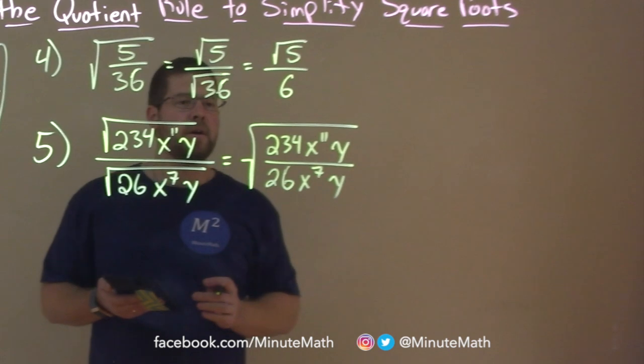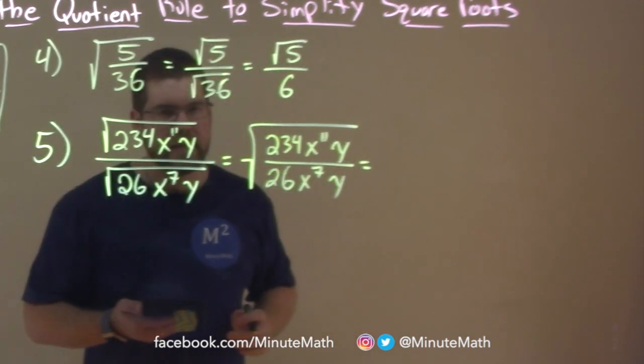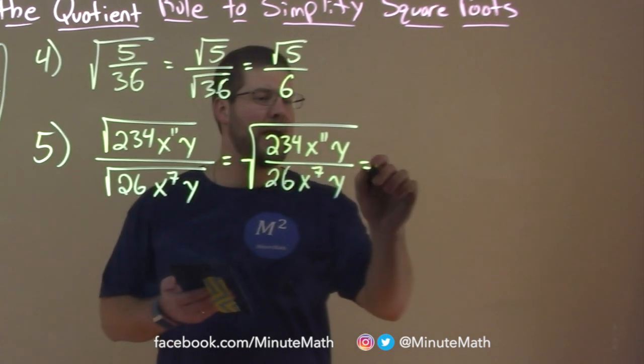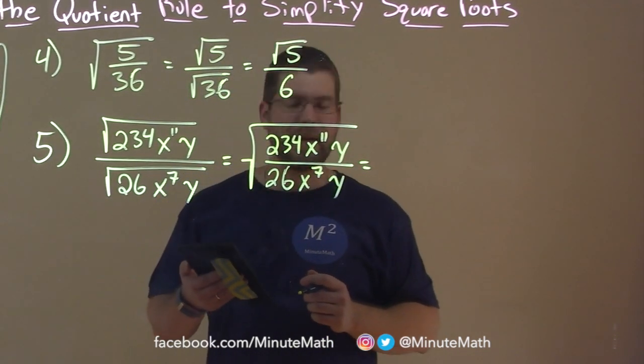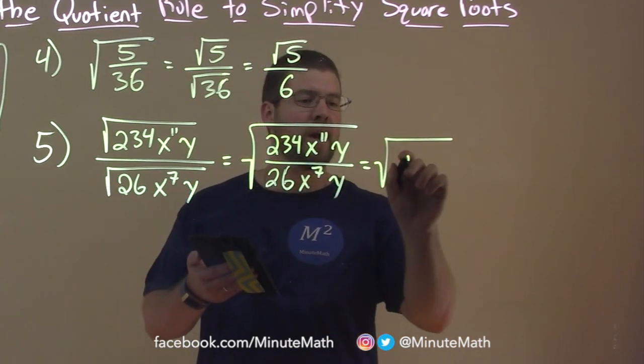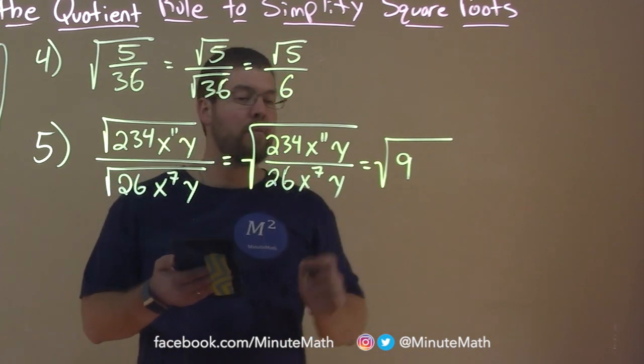And then from here, we now can start trying to break some things down. Now I don't know this always off the top of my head, but I have my notes here. But 234 divided by 26 is 9, so we have the square root of 9 here. Now, we have x to the 11th over x to the 7th.